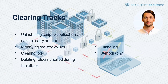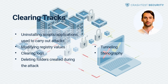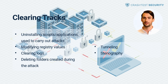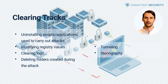To avoid any evidence that leads back to their malicious activity, hackers perform tasks that erase all traces of their actions. These include uninstalling scripts and applications used to carry out attacks, modifying registry values, clearing logs, and deleting folders created during the attack. For those hackers looking to maintain undetected access, they tend to hide their identity using techniques such as tunneling or steganography.